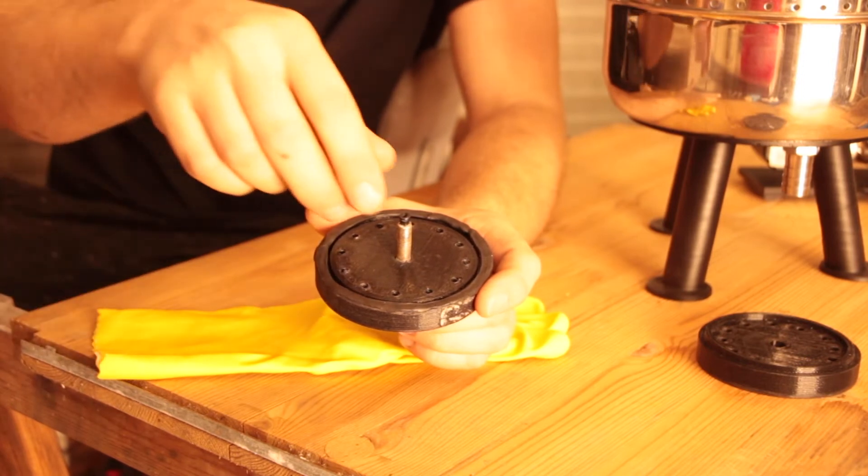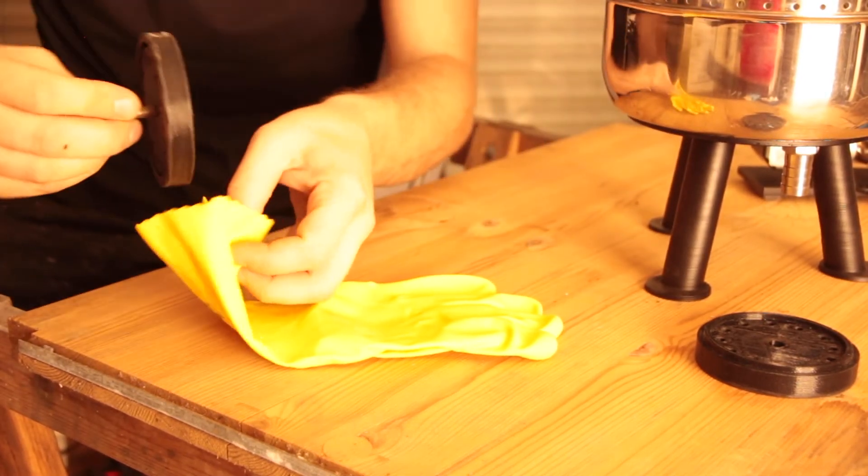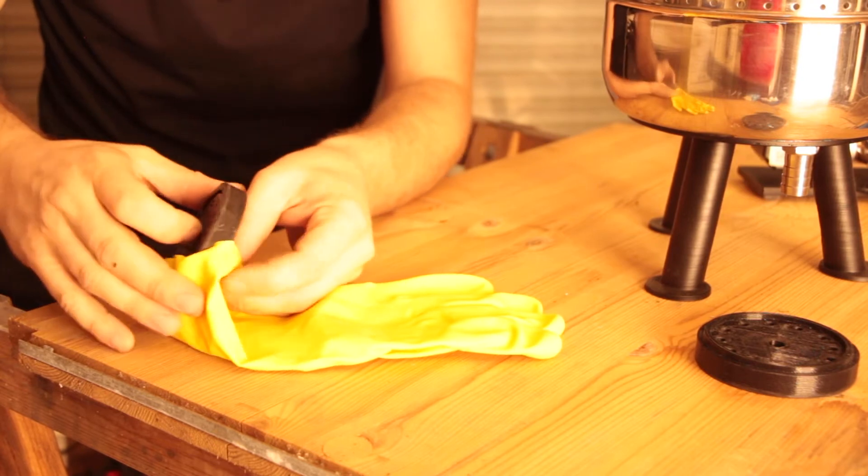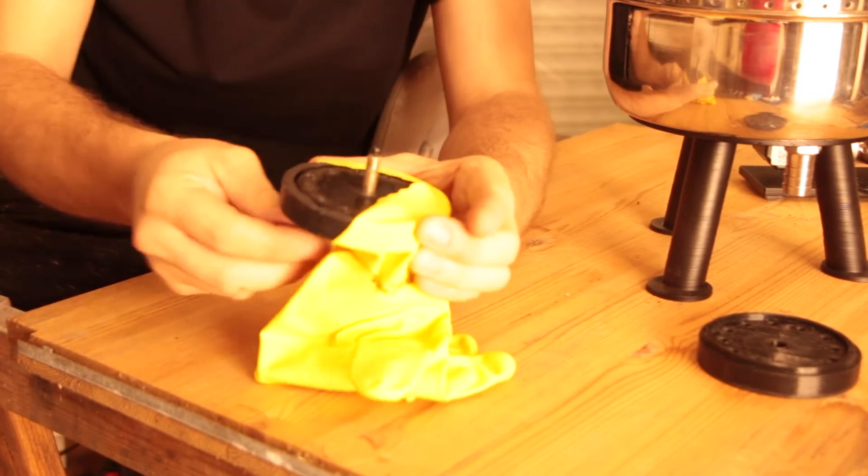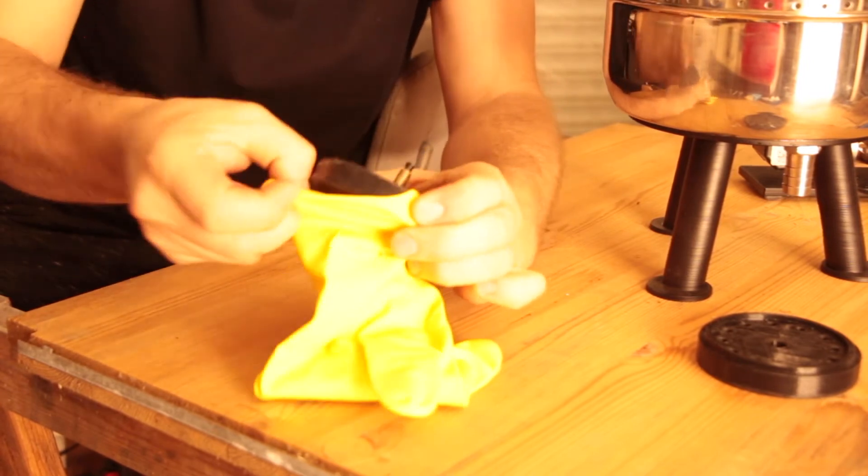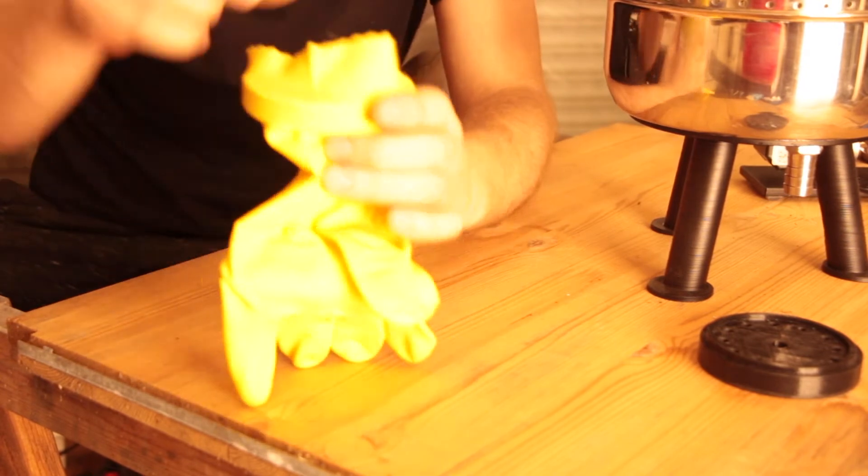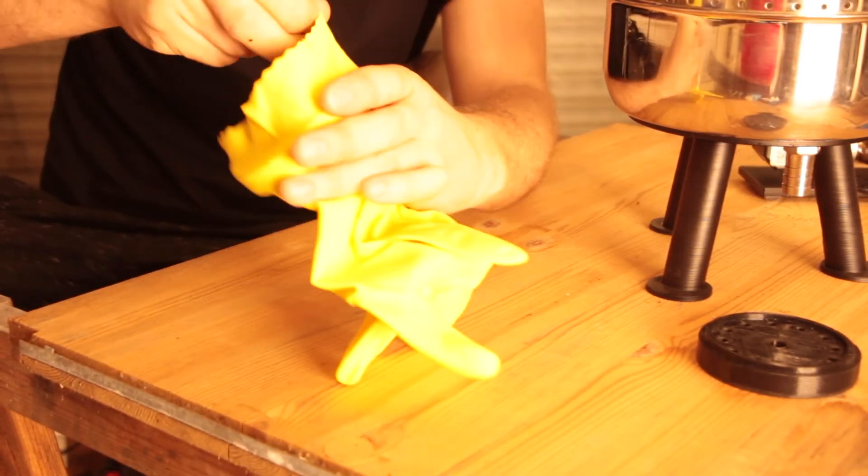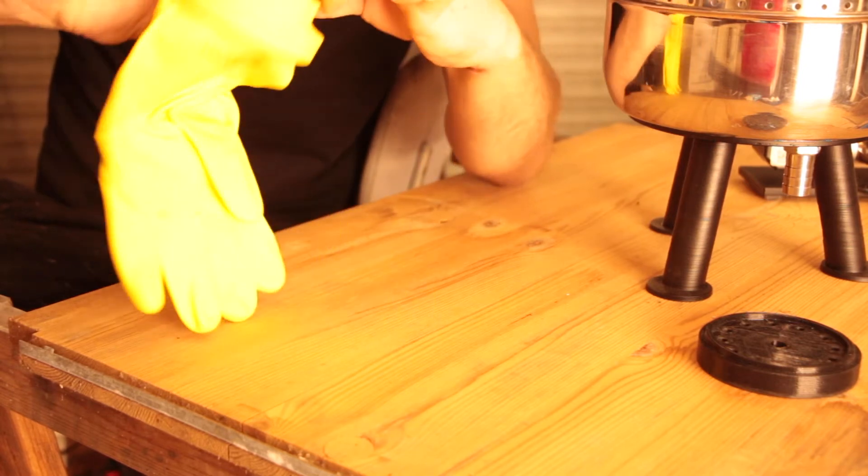This next step we take our 3D printed part with the sealant, we take our glove and we put it in just from the side, slide in a little bit, push the other edge over. And then you can align it a little bit, just go around and align like you think it's good.